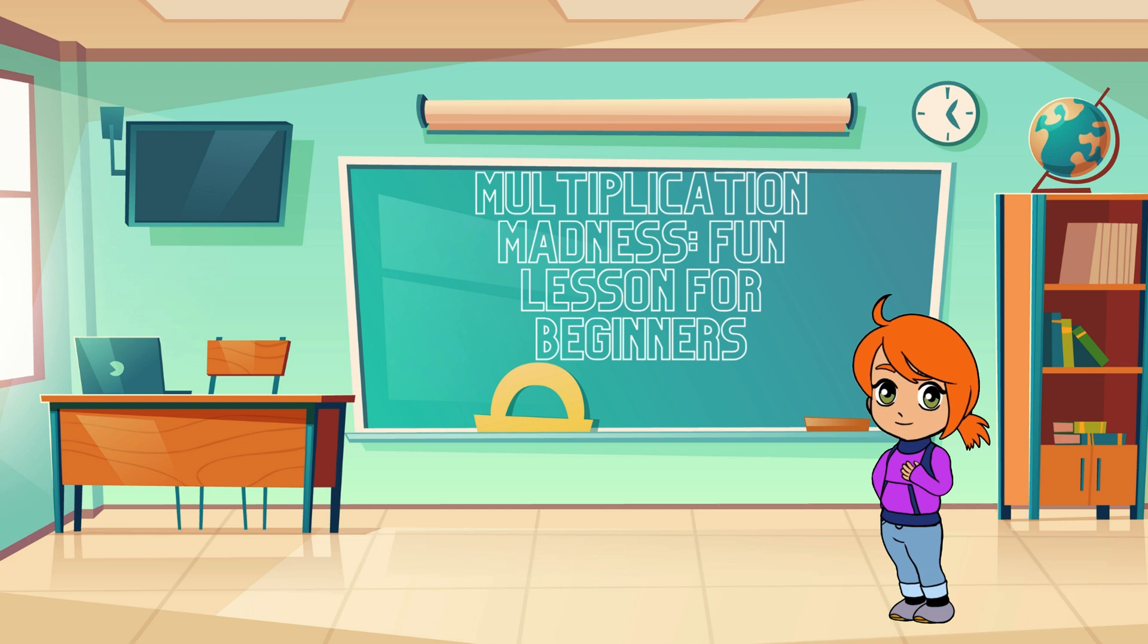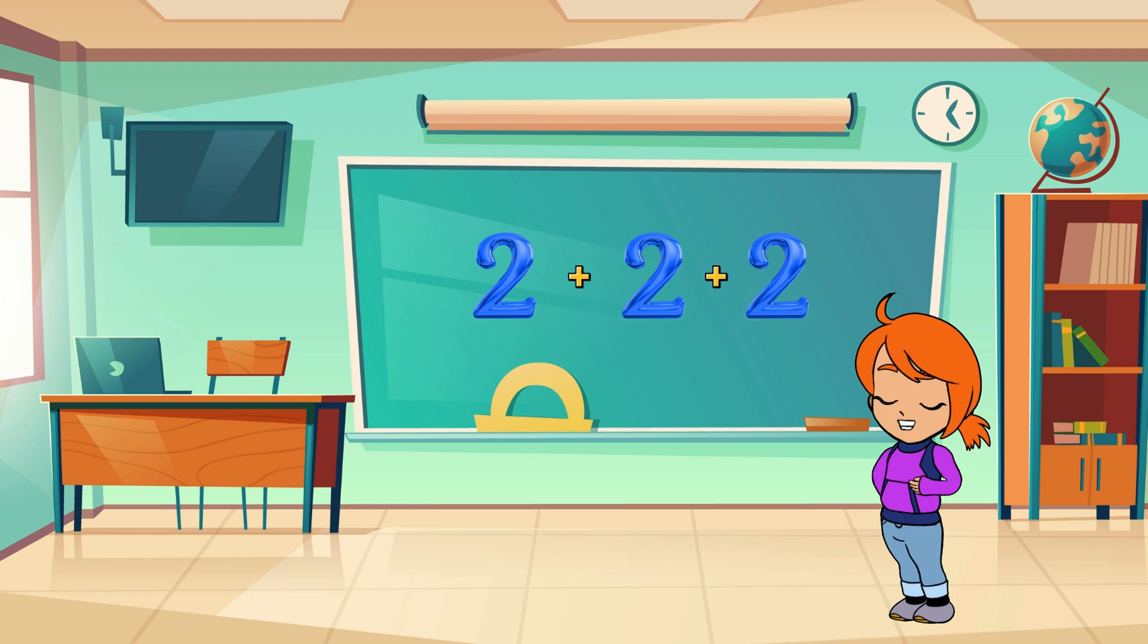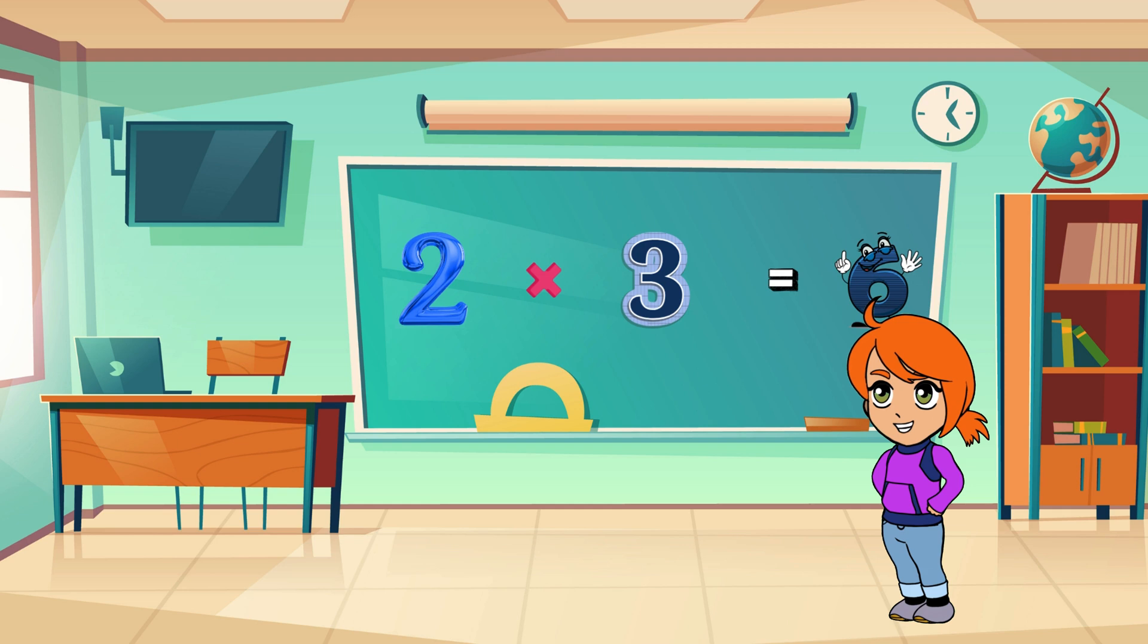Let's start with the basics. Multiplication is just a fancy way of adding numbers together quickly. Instead of saying 2 plus 2 plus 2, we can simply say 2 times 3, which equals 6.